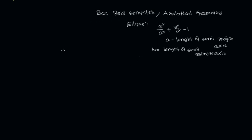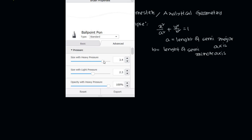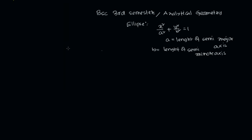And b represents the length of the semi-minor axis. Now let's look at the diagram. This is the x-axis, this is the y-axis, and this is the origin.